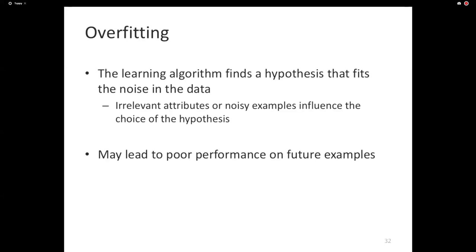One way of thinking about this: the learning algorithm finds a hypothesis — remember, learning is search over hypothesis spaces — that fits the data so well it fits not only the signal in the data but also the noise. As a result, when new examples come in, it no longer does well. Noise in the training data can take different forms: actual errors in features or labels, or irrelevant features you added because you didn't know better. Overfitting can lead to poor performance on future examples.